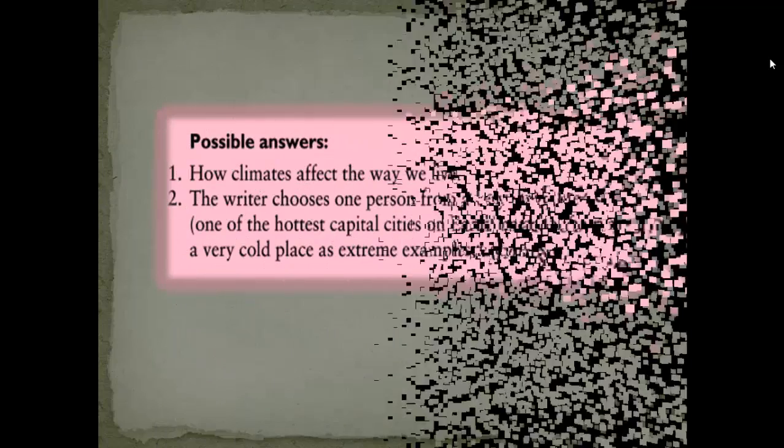From this introduction we can answer the questions. Question number one: what does the writer want to find out? The writer wants to find out how climates affect the way we live, how climates influence the way we live. And in number two, the writer chooses one person from a very hot place—one of the hottest capitals on earth—and one from a very cold place as extreme examples to compare. He wants to compare between these extreme places which have extreme climates and weathers.